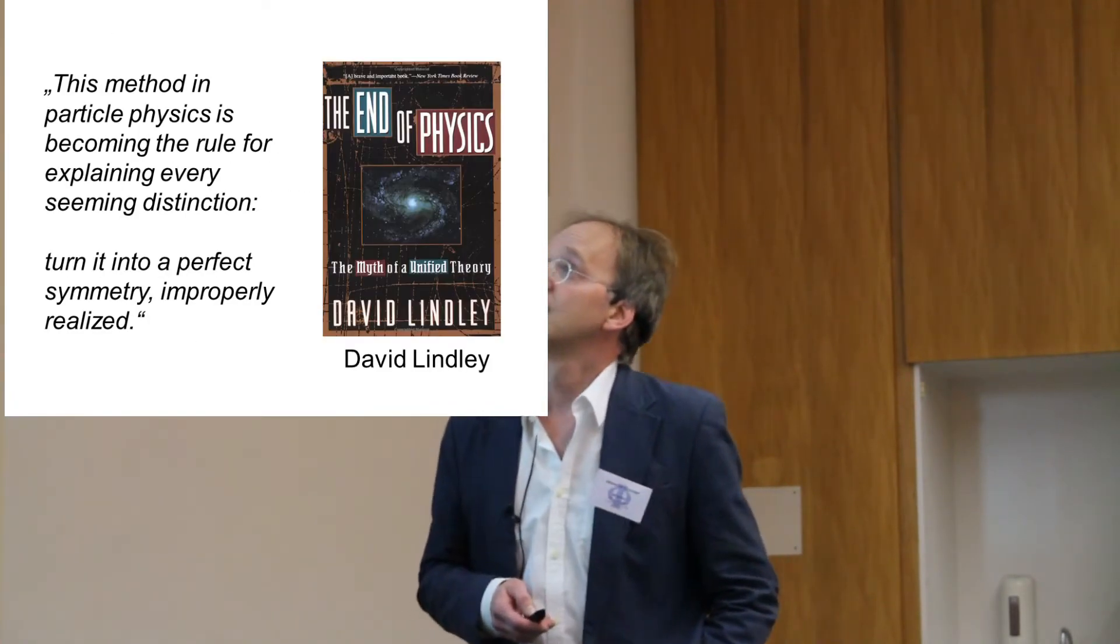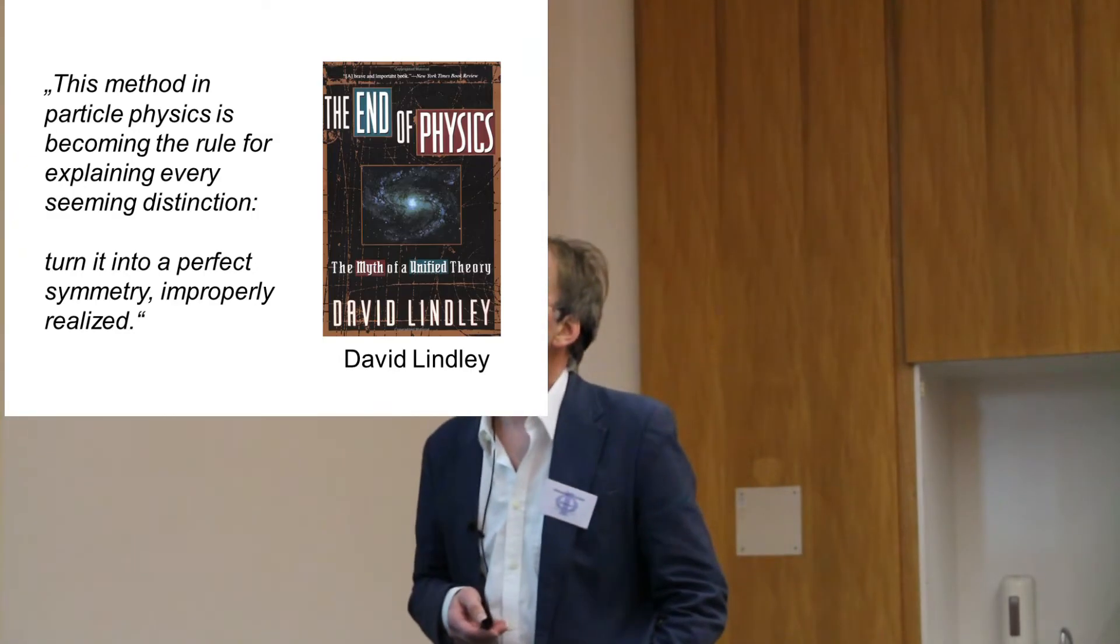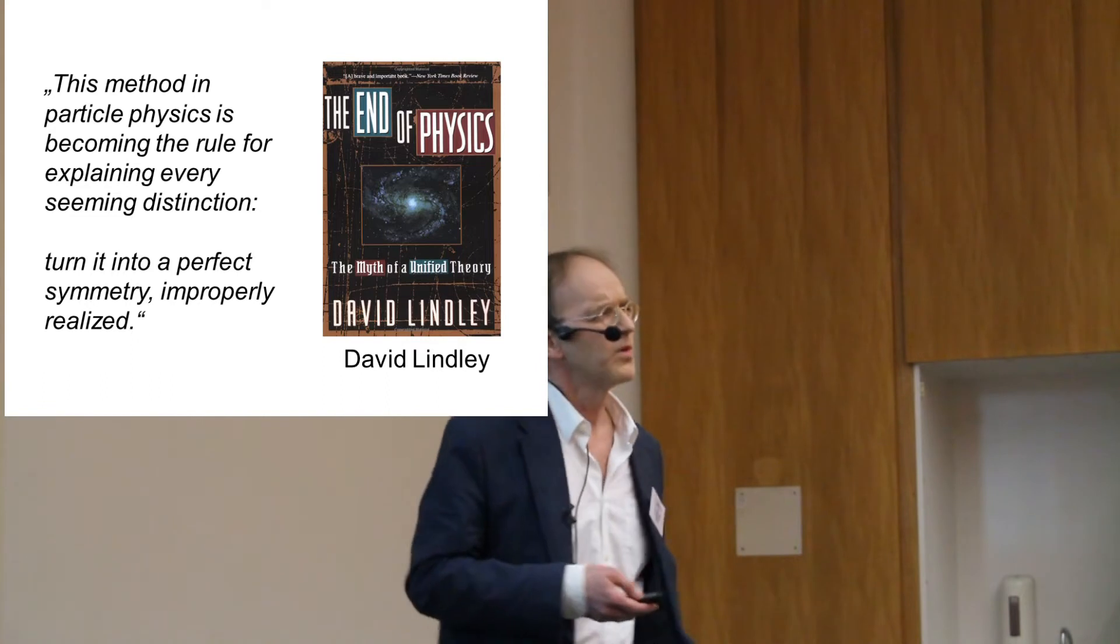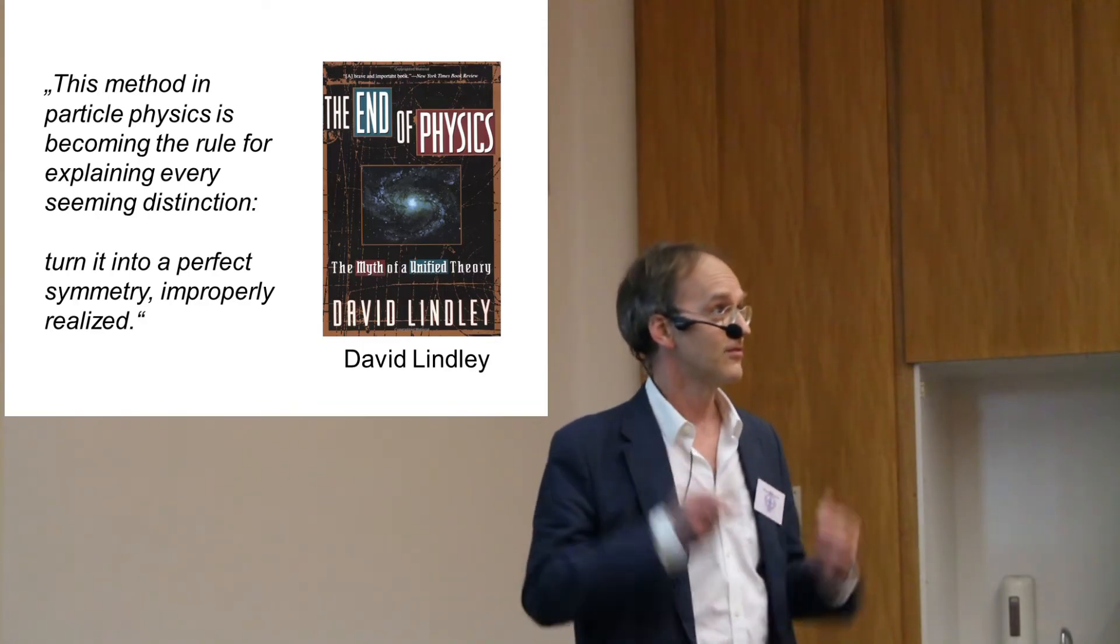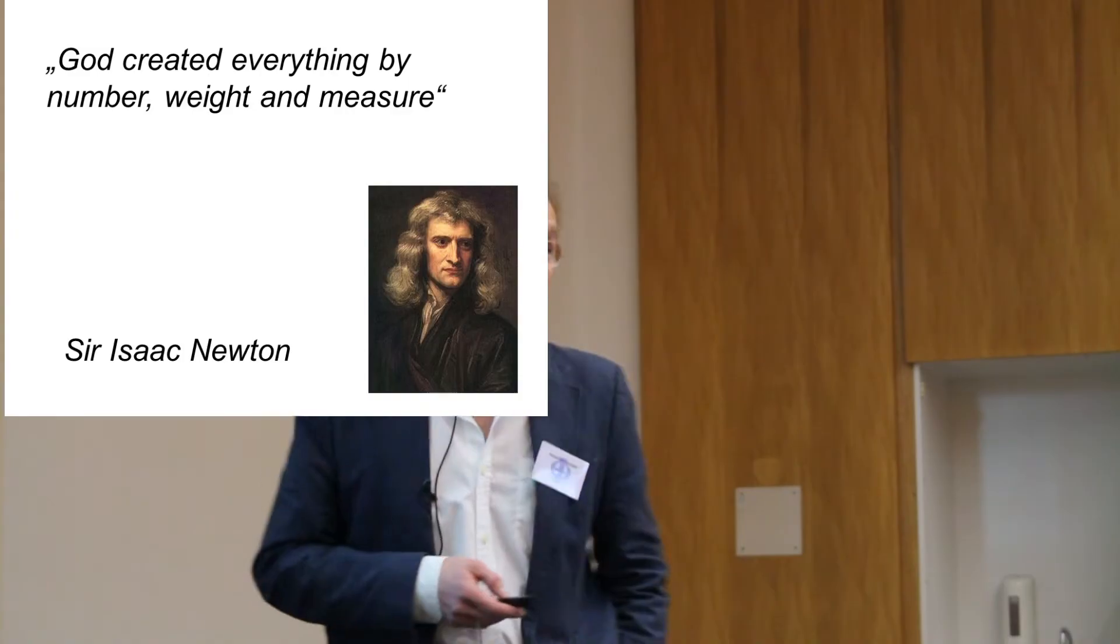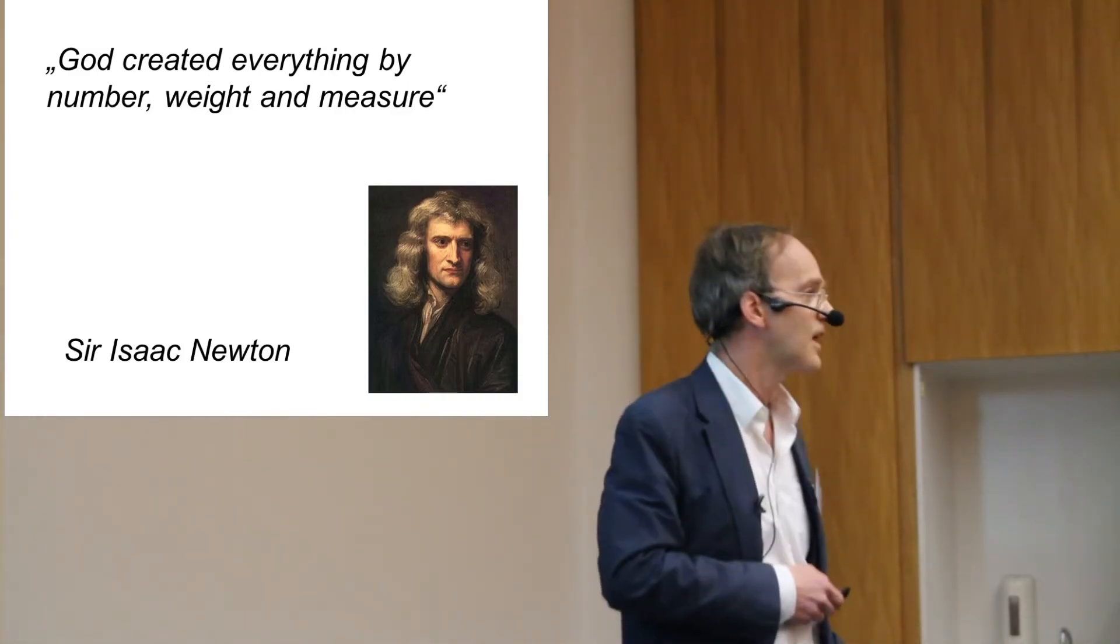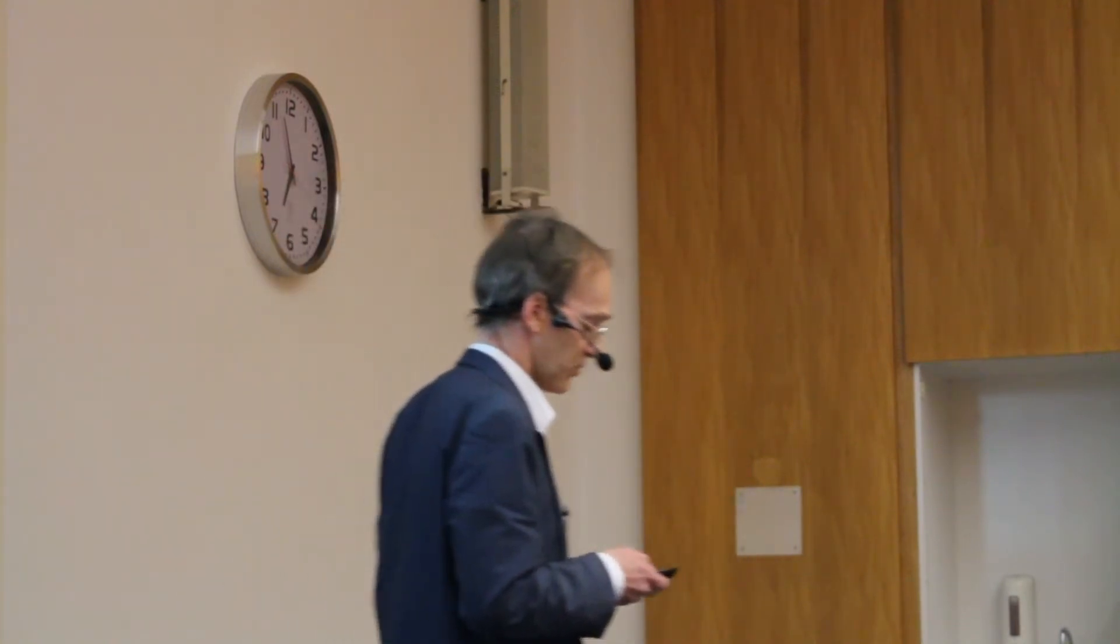So David Lindley, a distinguished critic of physics, says this method in particle physics is becoming the rule for explaining every seeming distinction. Turn it into a perfect symmetry improperly realized. He was talking about the so-called explanations of antimatter. What does that mean, symmetry breaking after all? It's an asymmetry? A pregnant virgin or swimming in the dry? God created everything by number, weight, and measure. And these are the things physicists ought to predict. We don't have to worry about fancy stuff like strangeness. Just predict a couple of numbers. That's what you're supposed to do as a physicist.